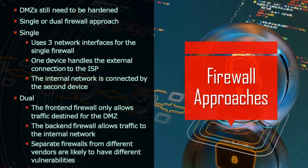Firewall architecture of a DMZ: Even though the DMZ is wide open, there are still hardening strategies and approaches in order to protect it. There are single and dual firewall approaches. With a single firewall, there will be three network interfaces. One will handle the external network device that makes the connection to the ISP, and the internal network is connected by the second device. Finally, the connections with the DMZ will be handled by the third network device. Though a single firewall is a good means of protection, having dual firewalls is even better, though it will be more costly.